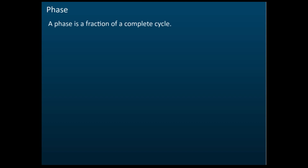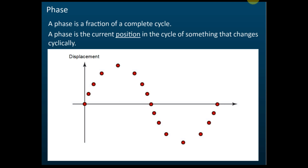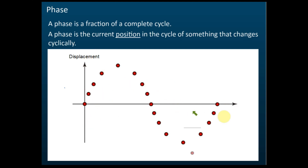This is an important concept and a common exam question. The first important term to know is phase. Phase is a fraction of a complete cycle — it describes the current position in the cycle of something that changes cyclically. Let's look at an example with a vibrating object that moves up and down.